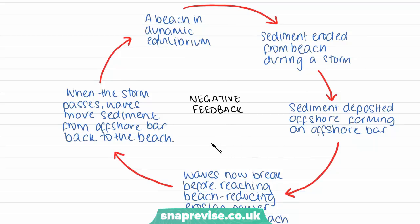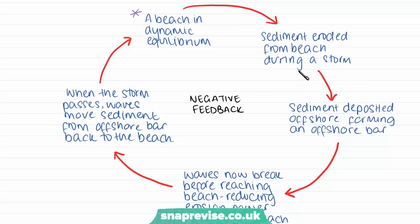Negative feedback is when the effects of an input are being nullified — meaning diminished or returned to normal. In this feedback cycle, we start with a beach in dynamic equilibrium, meaning the beach is in a good balance. Then we have sediment being eroded from the beach during a storm, meaning sediment is being lost from the beach and pulled out to sea. Then the sediment is deposited offshore, forming an offshore bar.